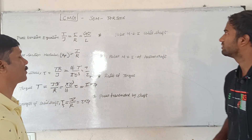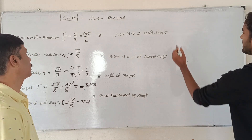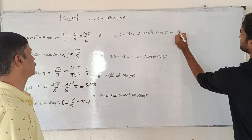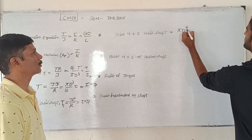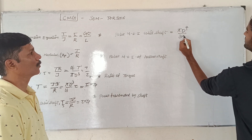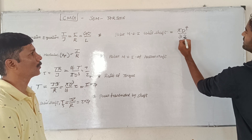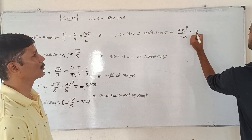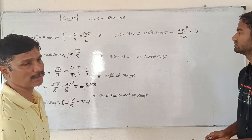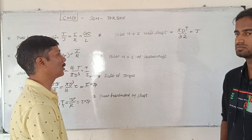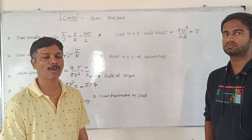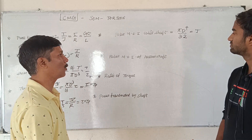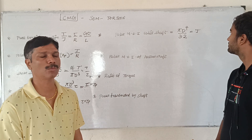That is the polar moment of inertia for a solid shaft. The polar moment of inertia is J equals Pi·D⁴ by 32. We found that the polar moment of inertia for a solid shape is Pi·D⁴ by 32, where the denominator is 32.